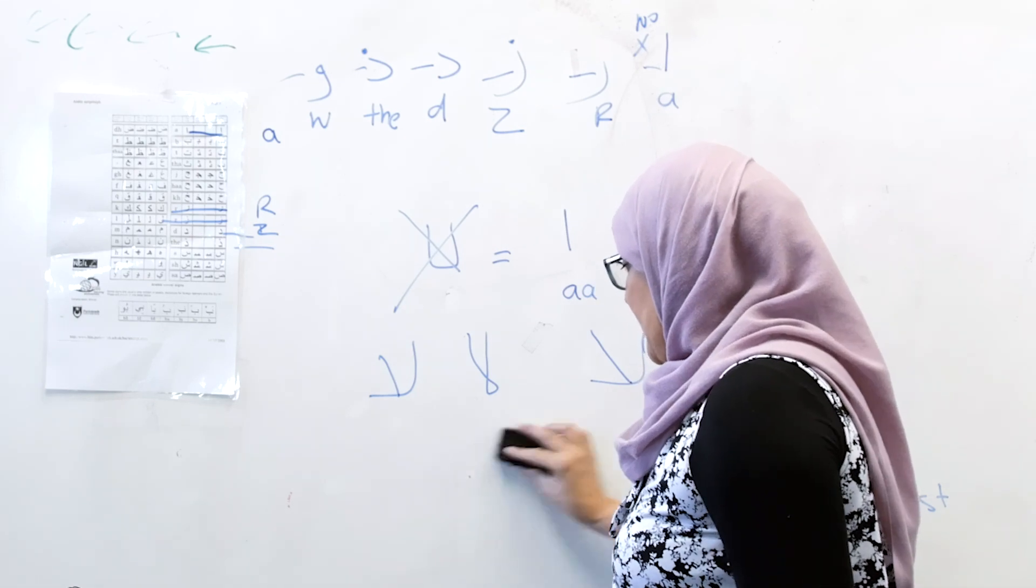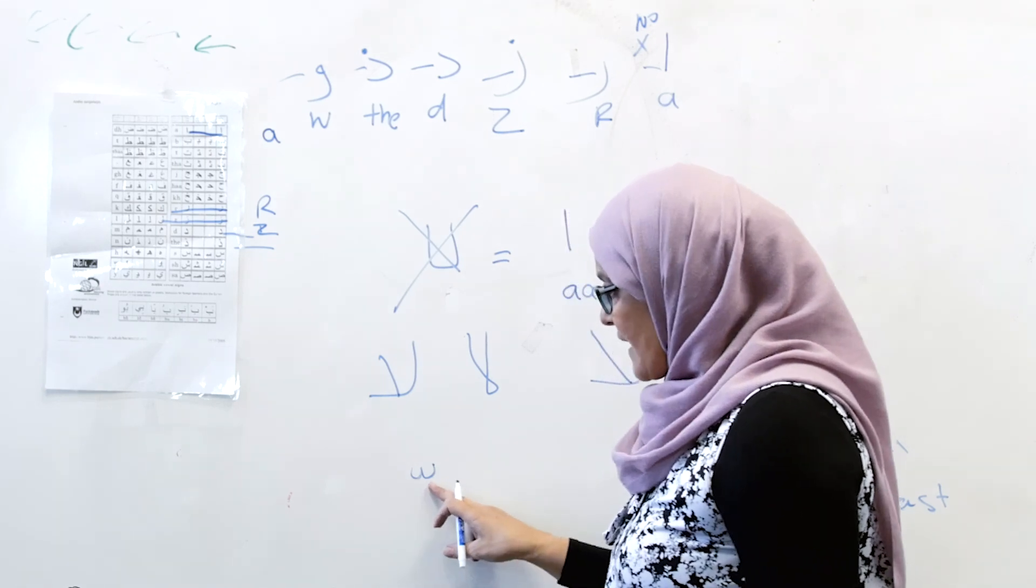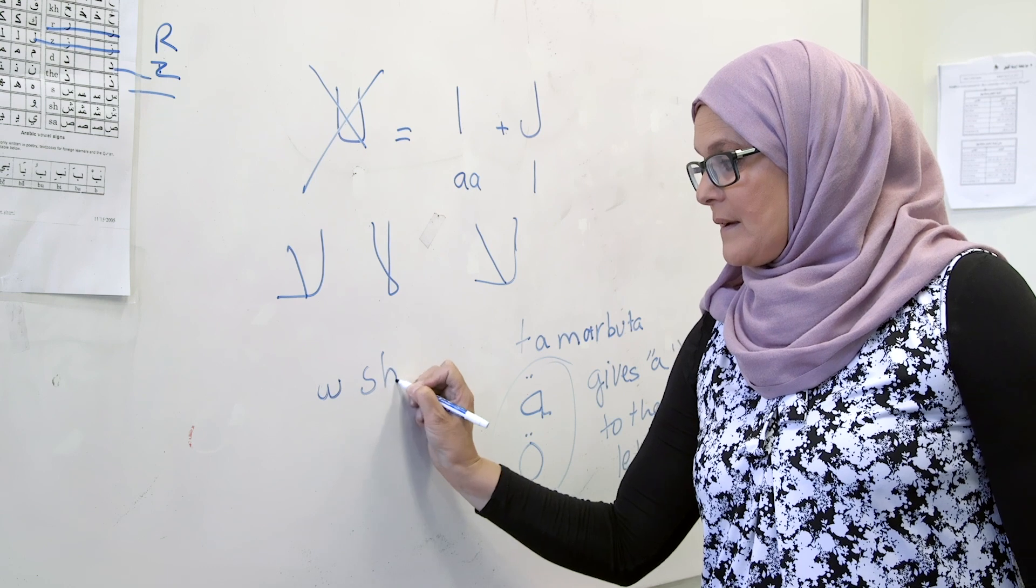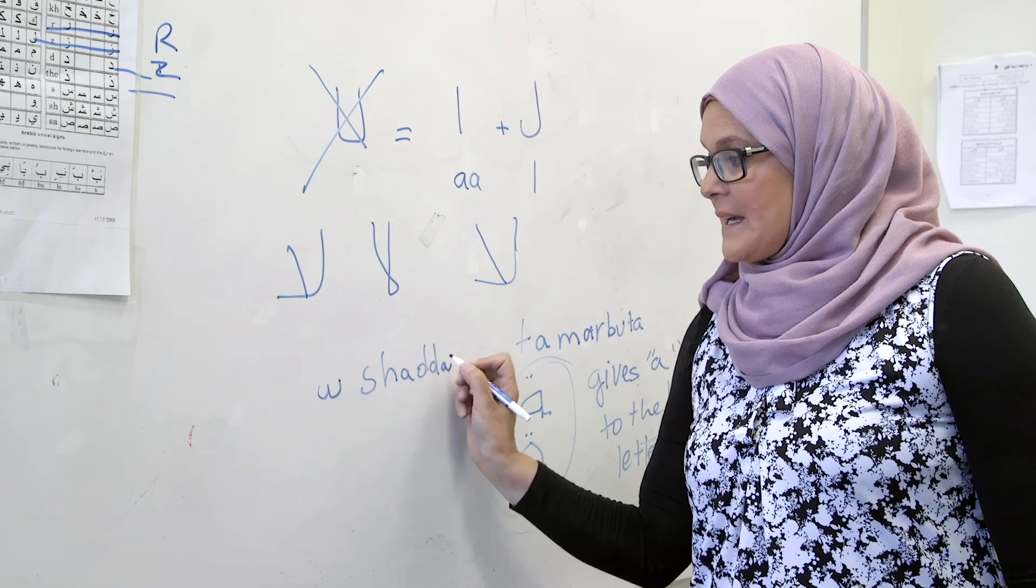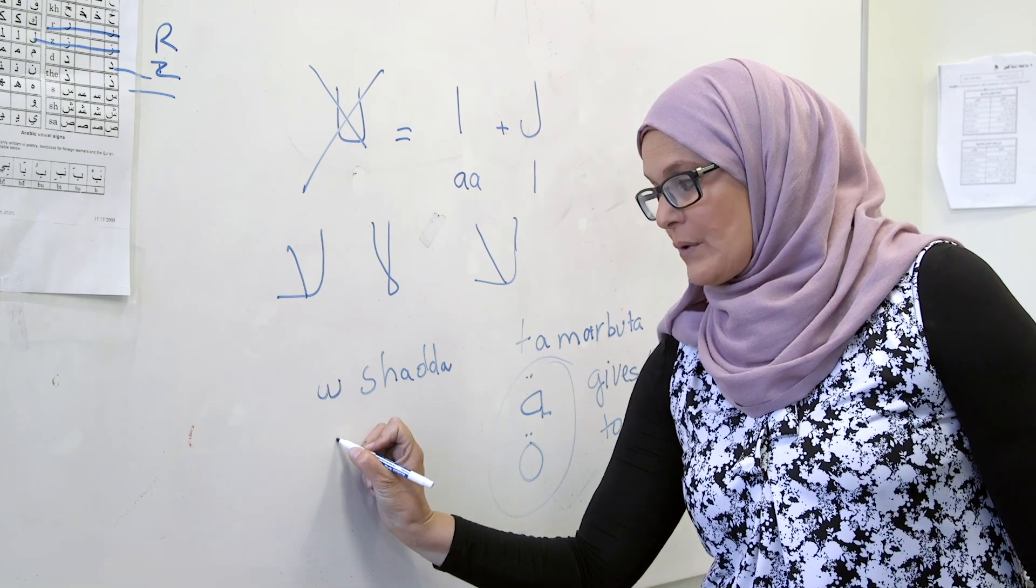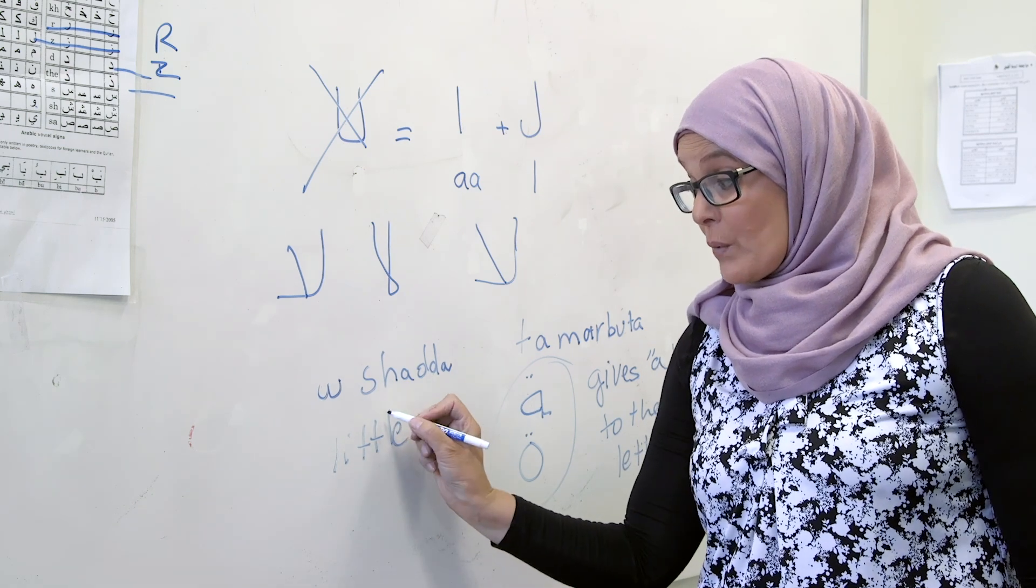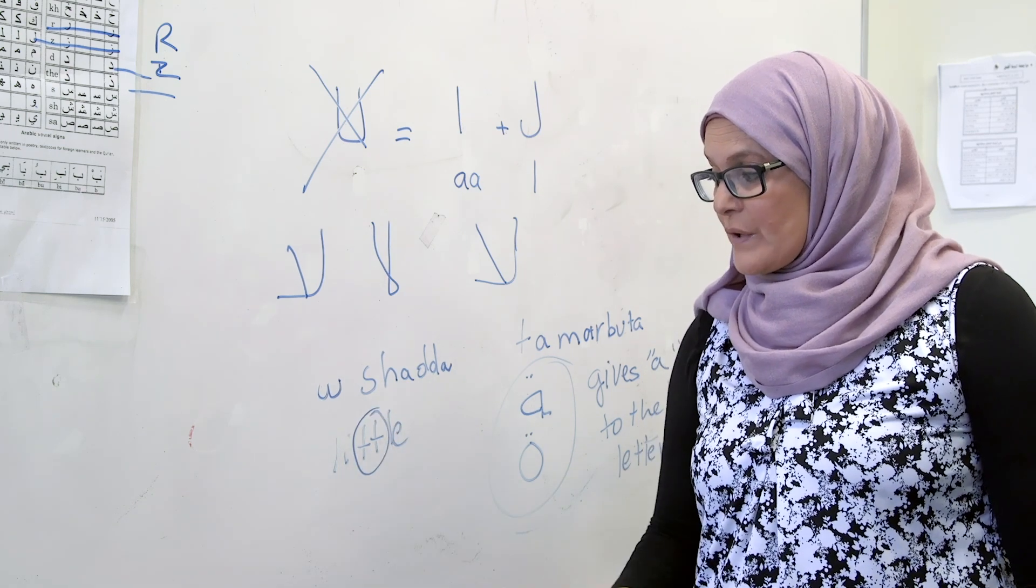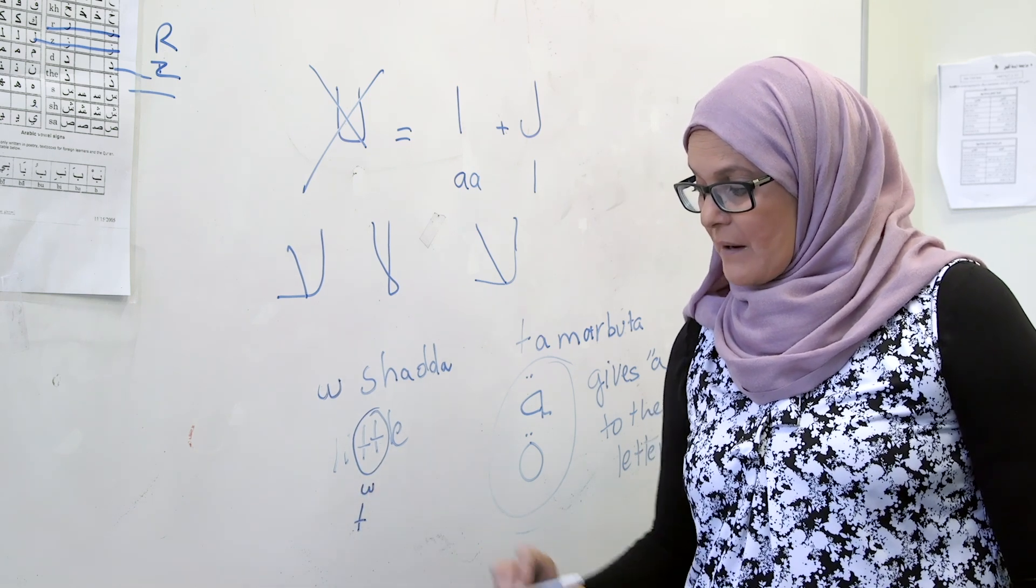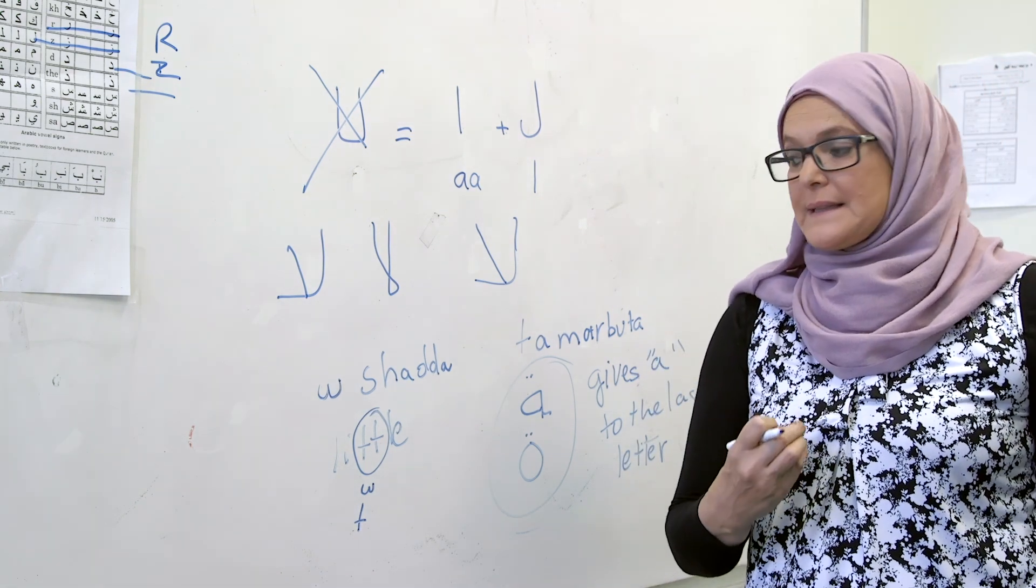And the last one I want to show you here - this part looks like a tiny W, called shedda. Shedda comes when you have a double consonant. Like for example, you want to write the word little in English. In Arabic, we take these two T's, make it one T, and put this mark on top to put more emphasis on the T. Little.